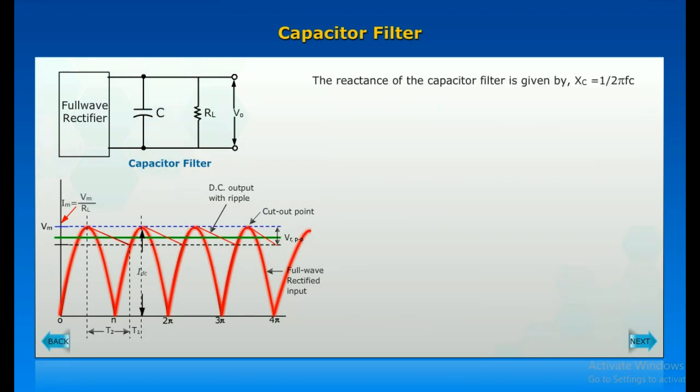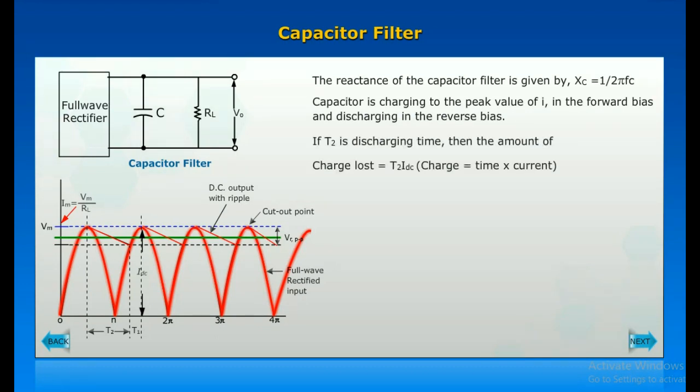The reactance of the capacitor filter is given by X_C equals 1 over omega C. The capacitor is charging to the peak value of I in the forward bias and discharging in the reverse bias. If T2 is the discharging time, then the amount of charge lost is equal to T2 times average current.